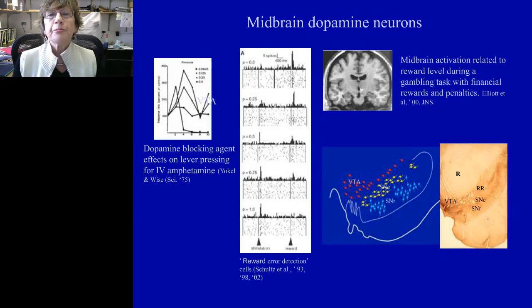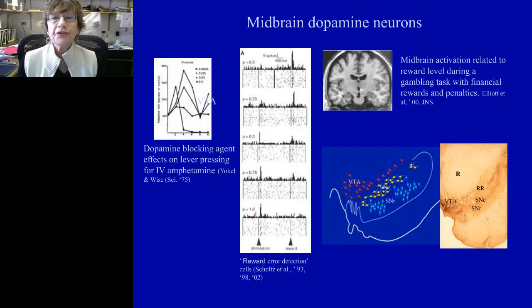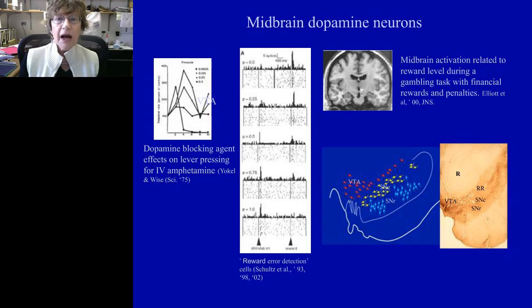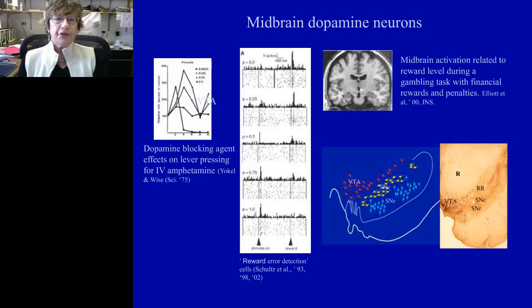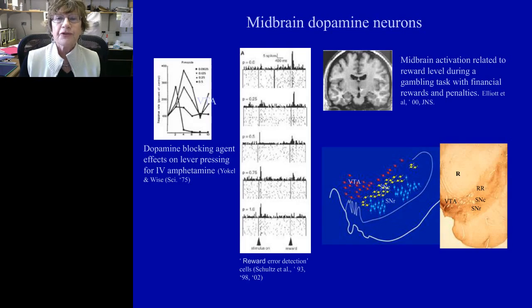I'm going to briefly talk about dopamine neurons. It's difficult to have a talk about reward without including these important cells. This is a classic set of experiments from a number of different laboratories — Wolfram Schultz's classic studies demonstrating how dopamine neurons act as reward prediction error cells, in which when a surprising reward occurs these cells fire in response to that surprise. This has been very well demonstrated through a number of subsequent studies.